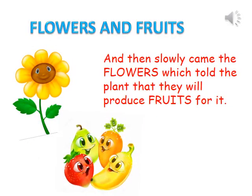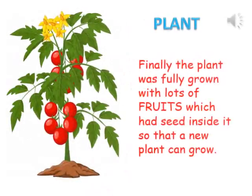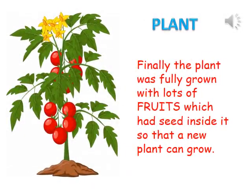And then slowly came the flowers, which told the plant that they will produce fruits for it. Finally, the plant was fully grown with lots of fruits which had seeds inside, so that a new plant can grow.